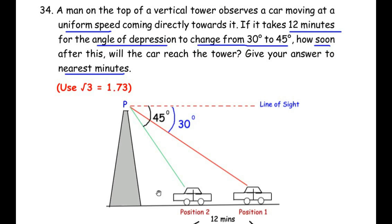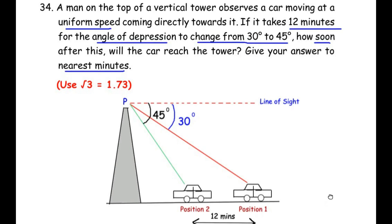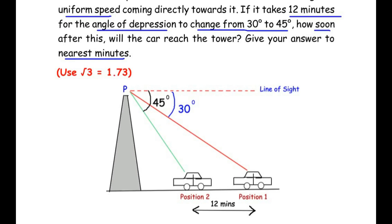When he looks at the car the first time, he makes an angle of 30 degrees with respect to the line of sight. The car is moving at uniform speed towards the tower, and moves from position 1 to position 2. At position 2, the angle of depression becomes 45 degrees. The car moves from position 1 to position 2 in 12 minutes, and we need to find the time taken by the car to reach the tower.